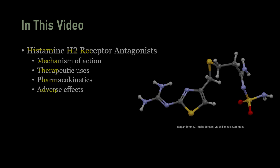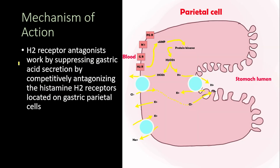The H2 receptor antagonists work by suppressing the gastric acid secretion by competitively antagonizing the histamine H2 receptors located on the gastric parietal cells. On this picture, you can see the parietal cell, which has multiple types of receptors including the histamine H2 receptors — those are the receptors blocked by the H2 receptor antagonists.